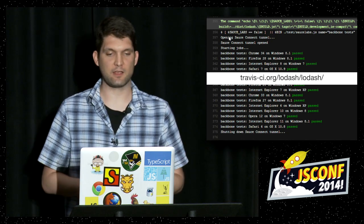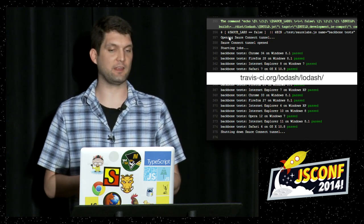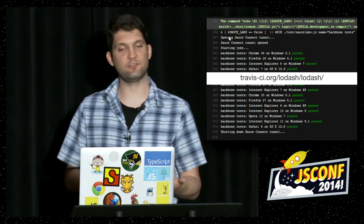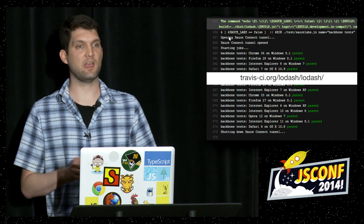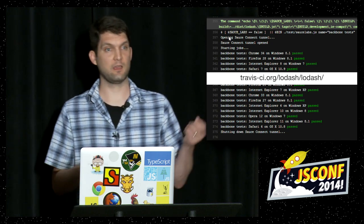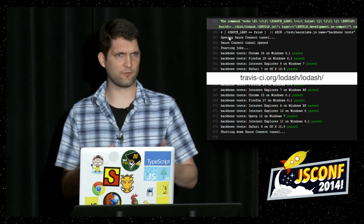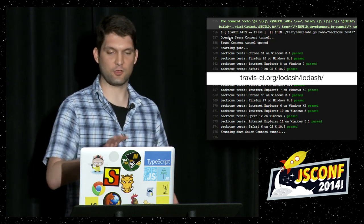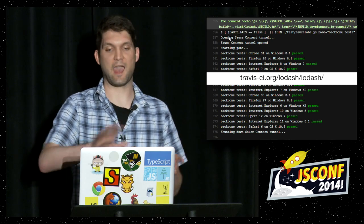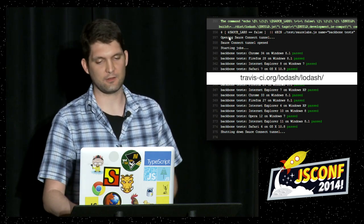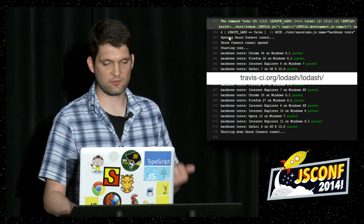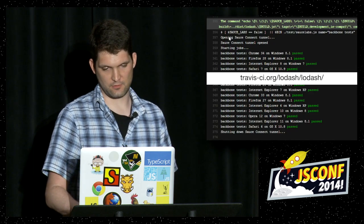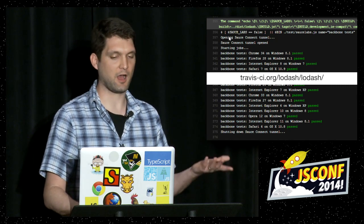This is what it looks like on Travis CI when it's actually running the jobs. You'll see it says the name of the browser, the version, and 'passed.' If there was an issue, it would say 'failed' with a count. If there was a connection issue, it would say what the issue was and may give you a link for more information. When everything is good, you'll see things like this where it just says 'passed.' I also use chalk for the fancy colors.